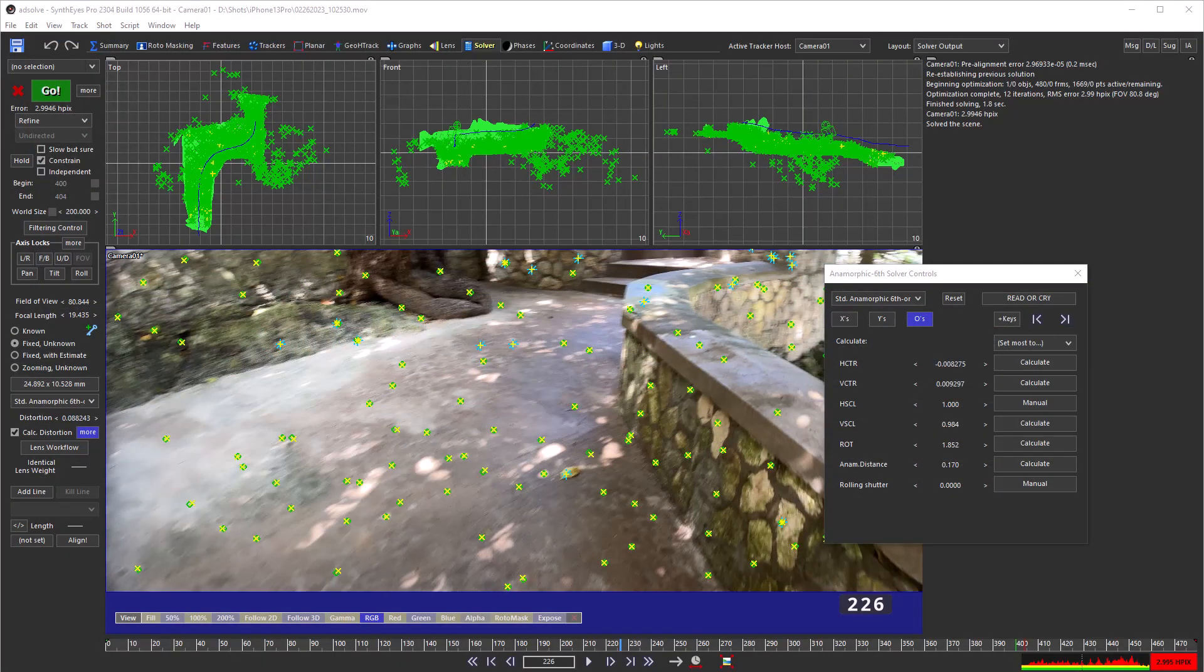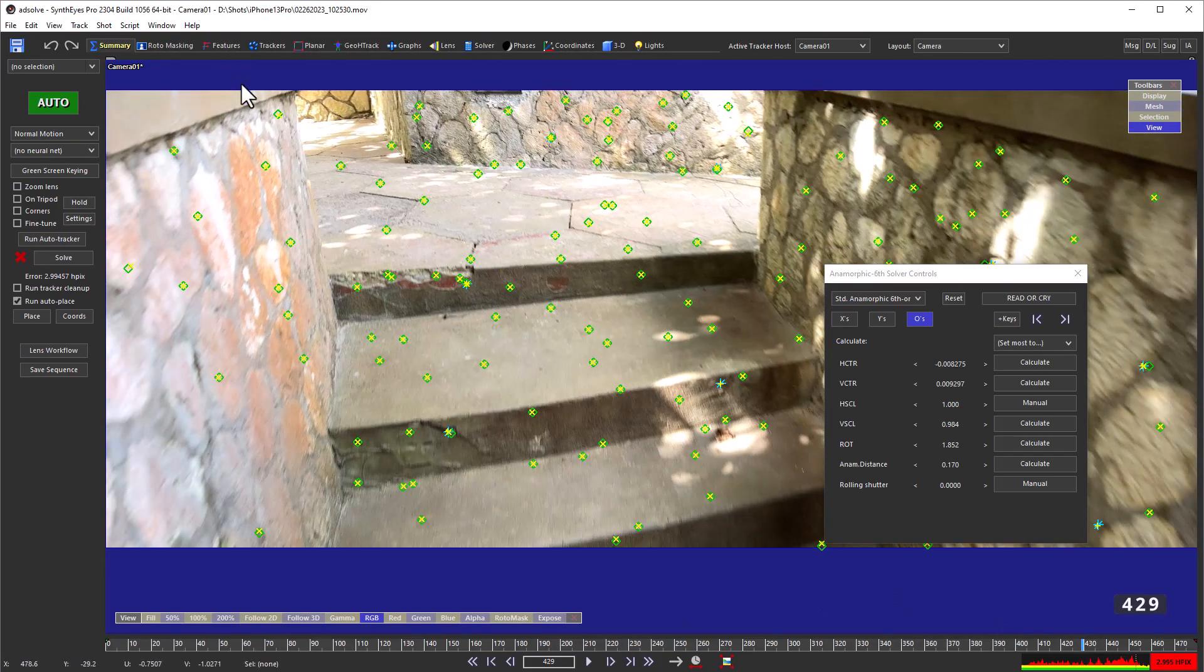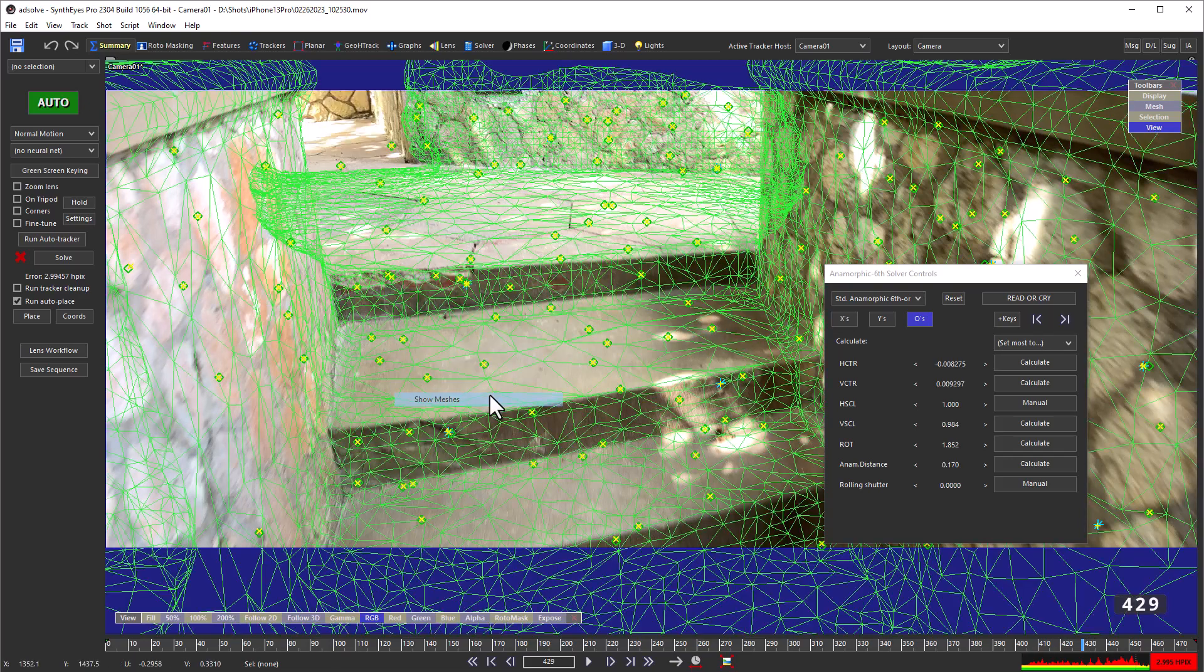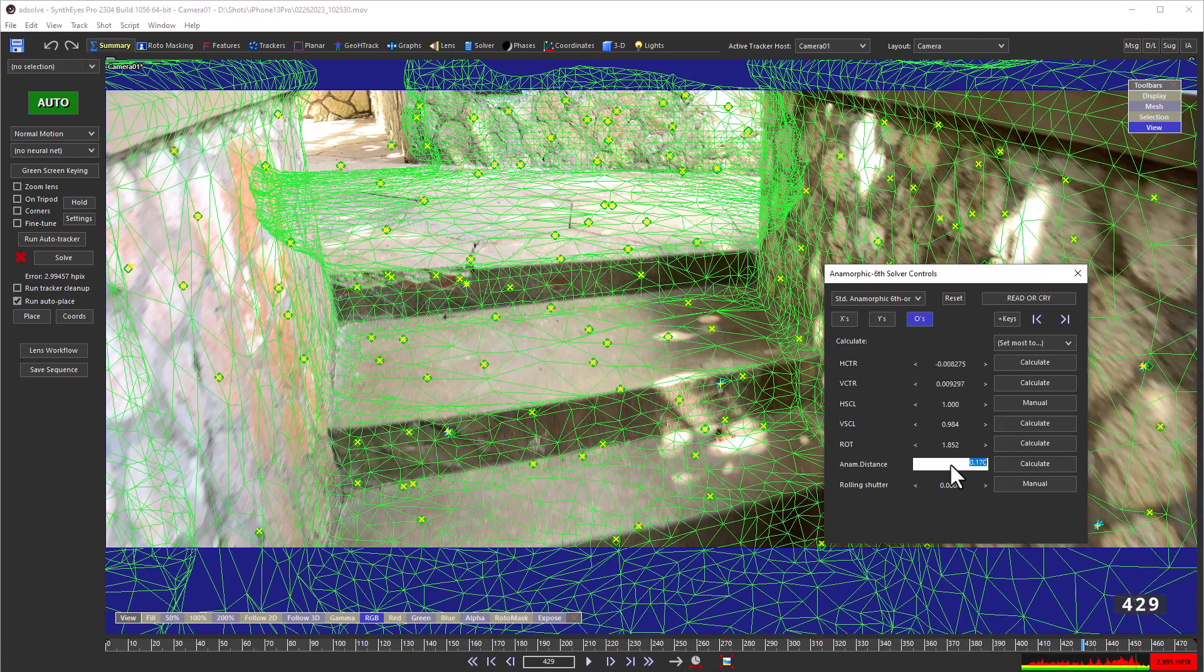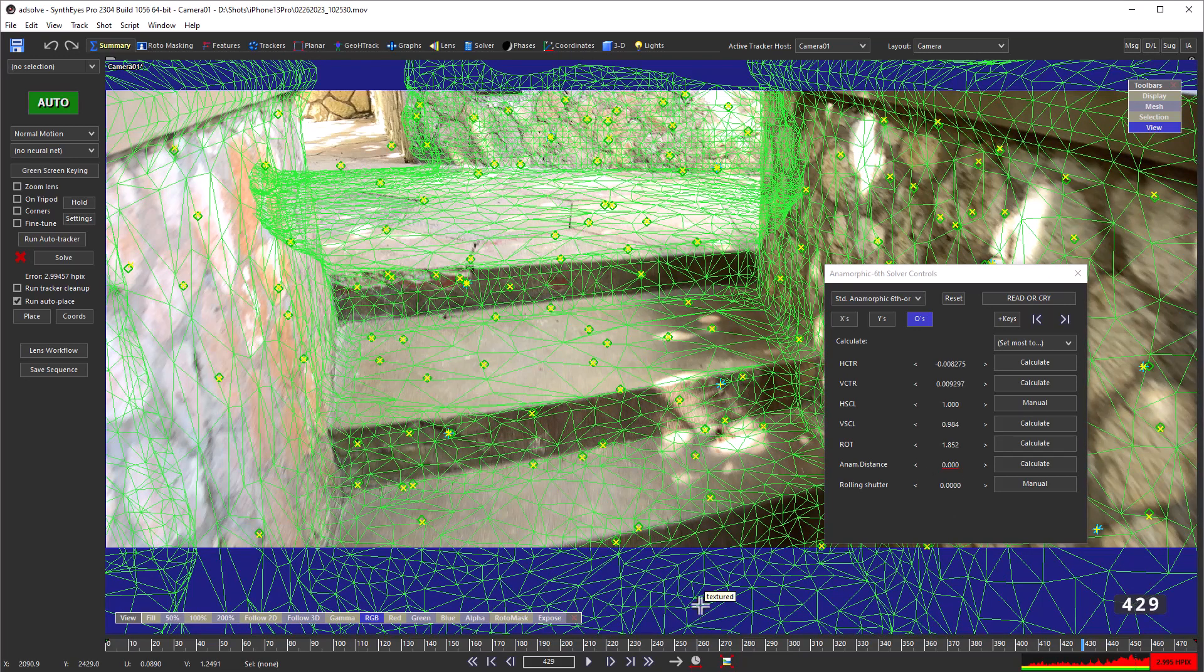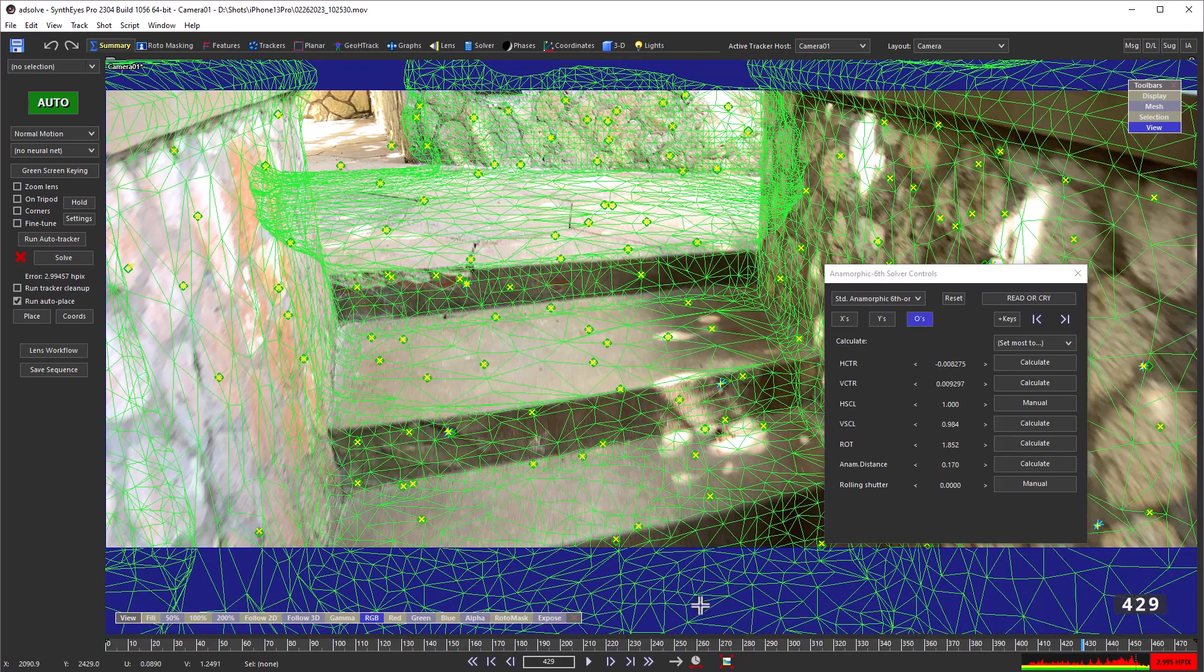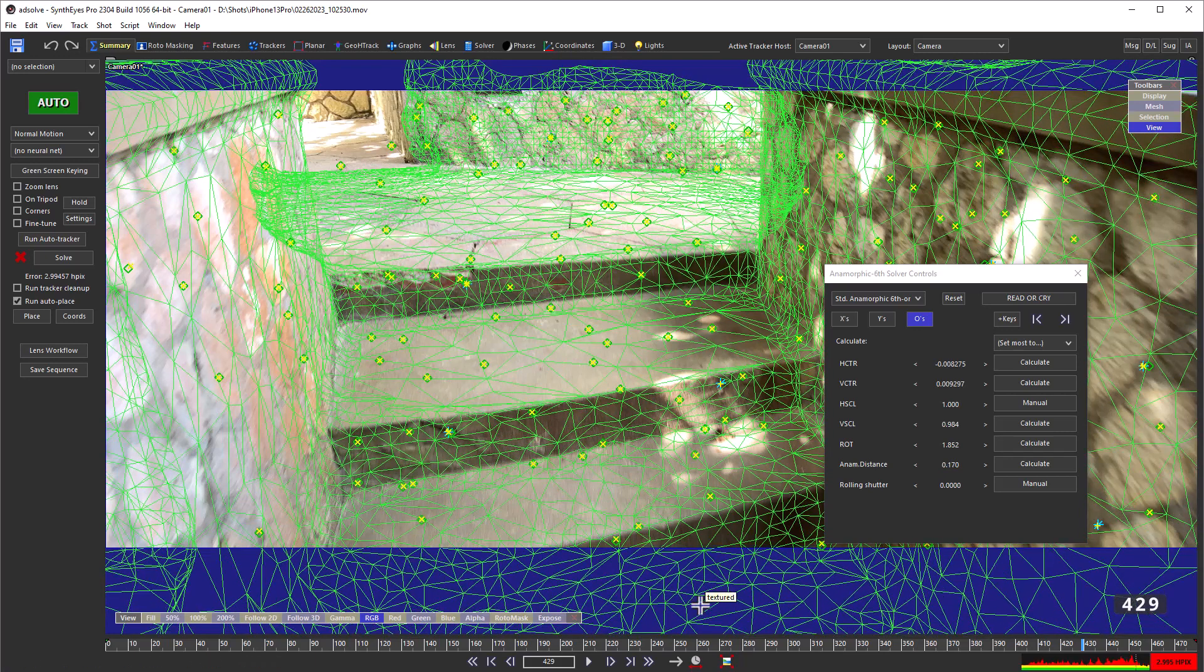Let's take a look at the effect of the anamorphic distance on the stairway mesh in the camera view. I'm going to set the anamorphic distance value to zero, then undo and redo so you can see the difference. If you look carefully, you can see that the mesh is affected more on the closer wall on the right than the more distant wall in the back.